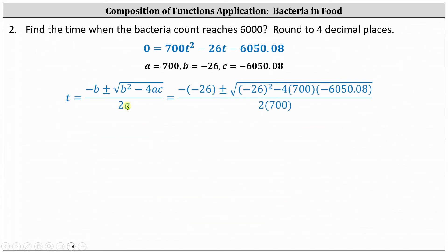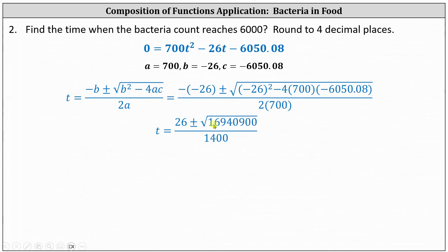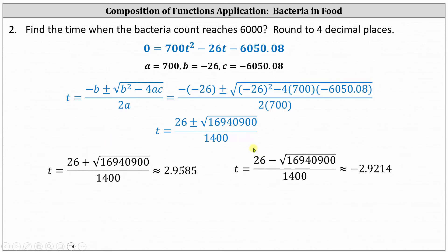To apply the quadratic formula, we have a equals 700, b equals negative 26, and c equals negative 6,050.08. Below, we have the values substituted into the quadratic formula. The opposite of negative 26 simplifies to positive 26. The discriminant under the square root simplifies to 16,940,900, and our denominator is 1,400. Remember, we have two solutions — one with a sum and one with a difference. Evaluating in the calculator, t is approximately 2.9585 and t is approximately negative 2.9214.